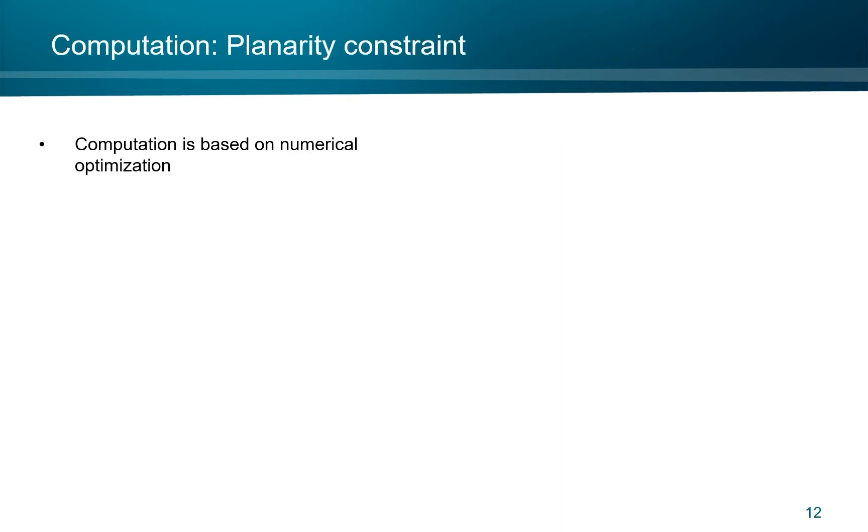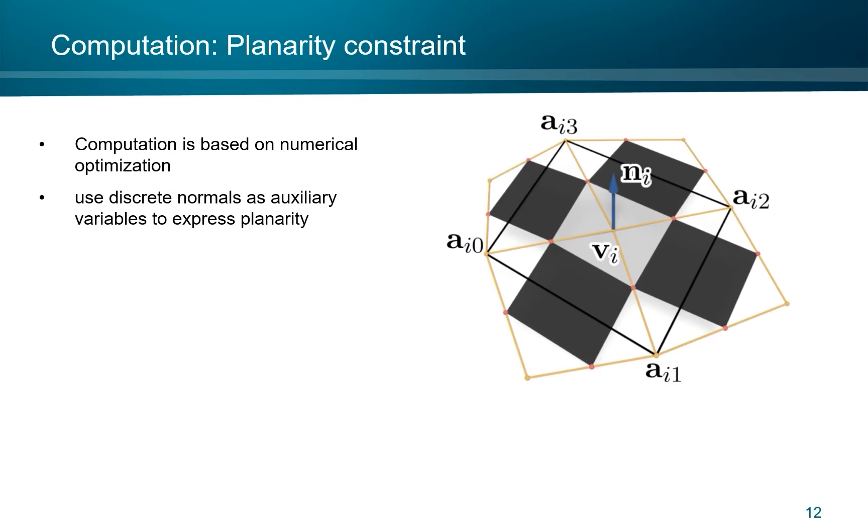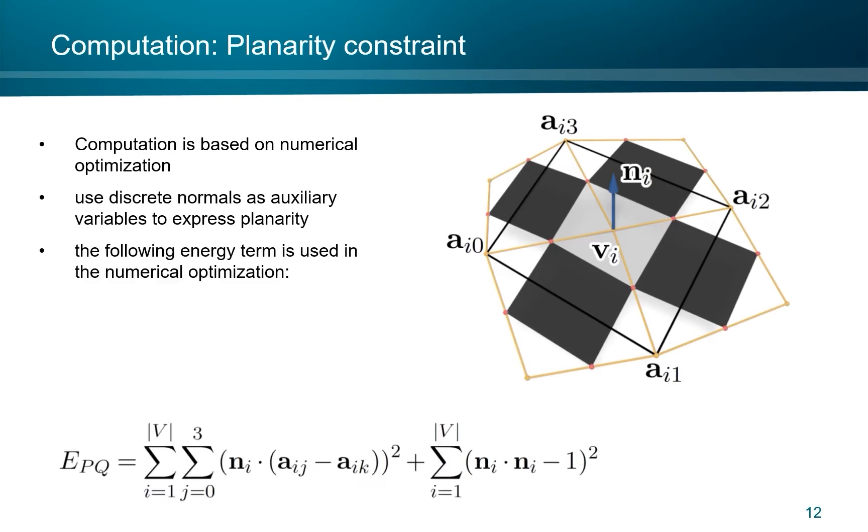The actual computation is based on numerical optimization. We use the discrete normals as auxiliary variables to express planarity. The corresponding term in the numerical optimization has as first part this one, where we express that the normals are orthogonal to all edges of the corresponding face in the diagonal mesh. The second term normalizes these normals. It takes care of avoiding that these normals tend to zero vectors, in which case the first term would not express planarity.